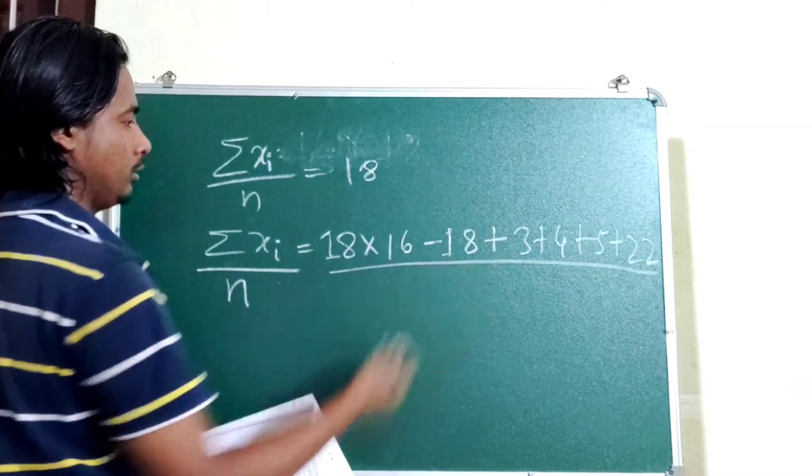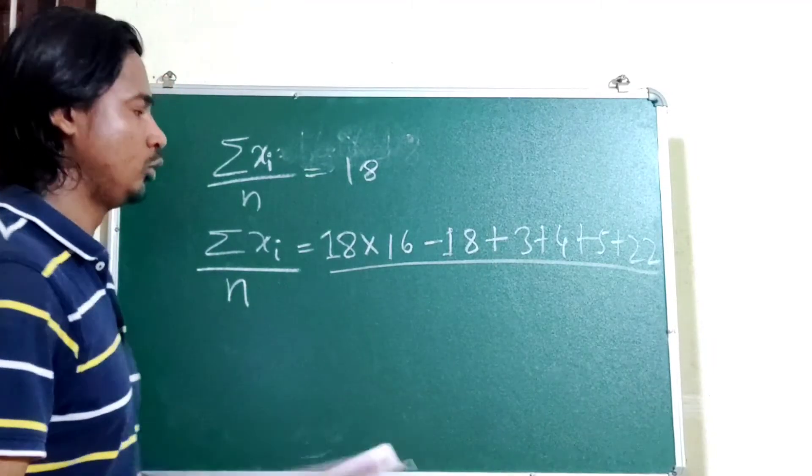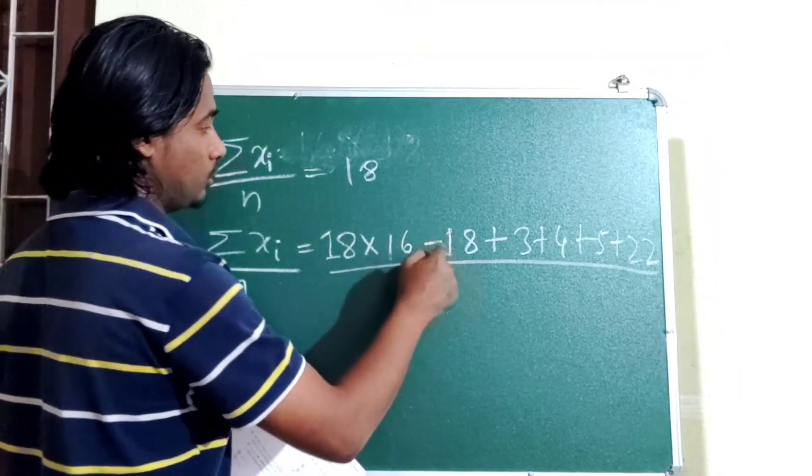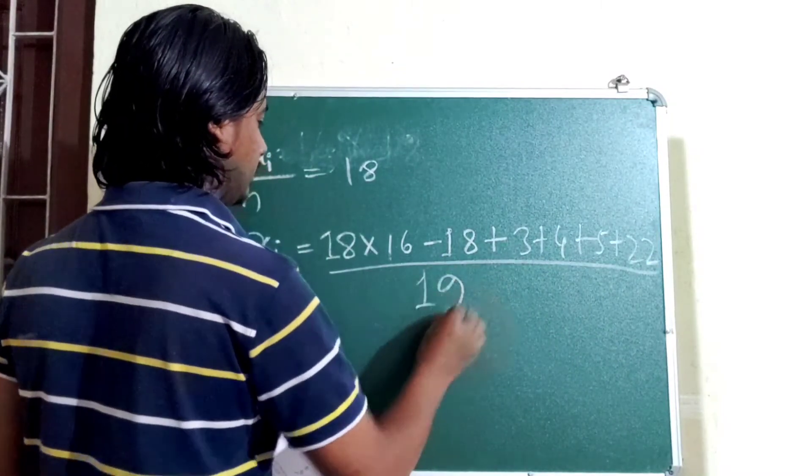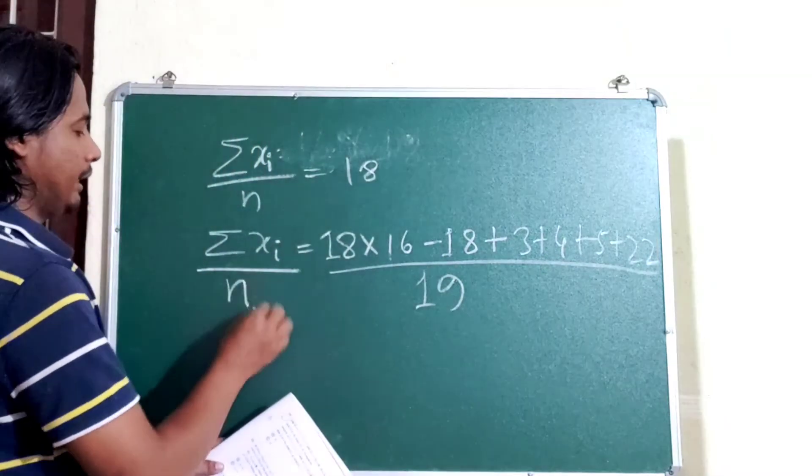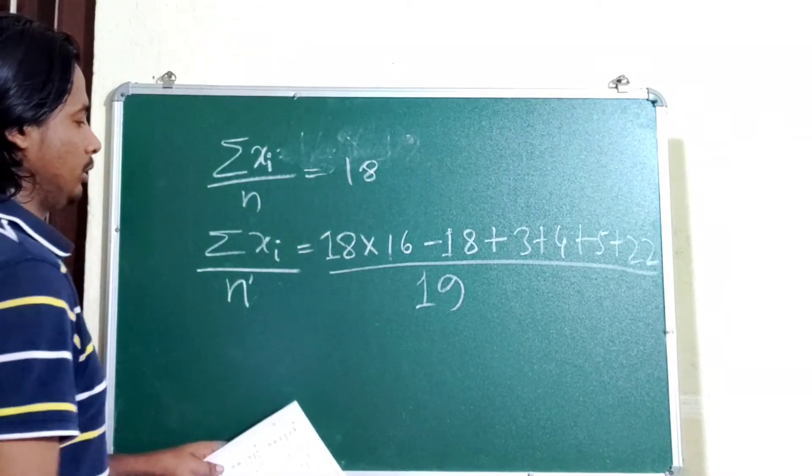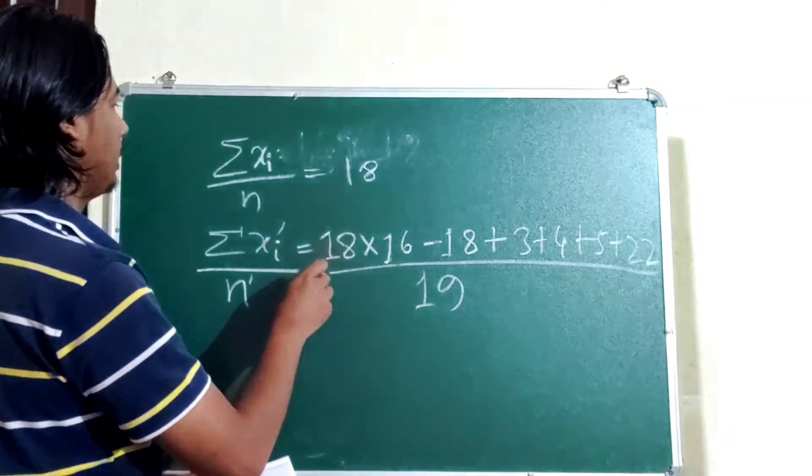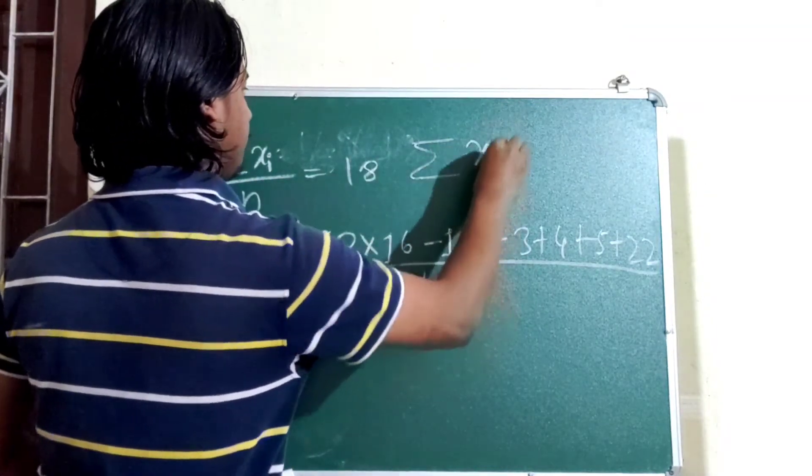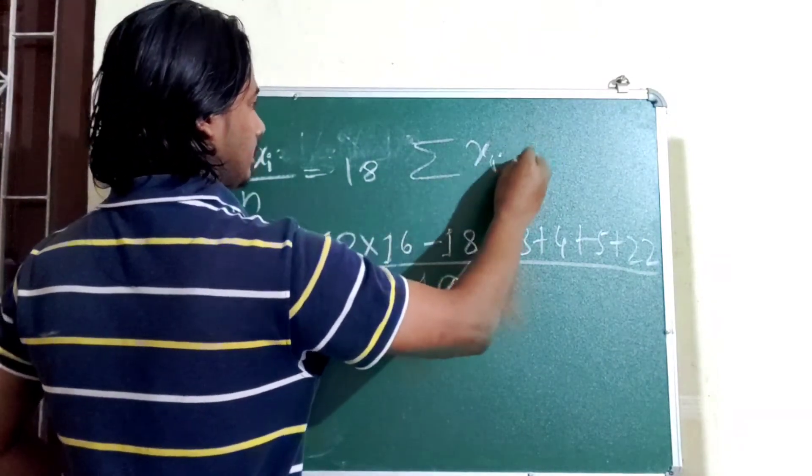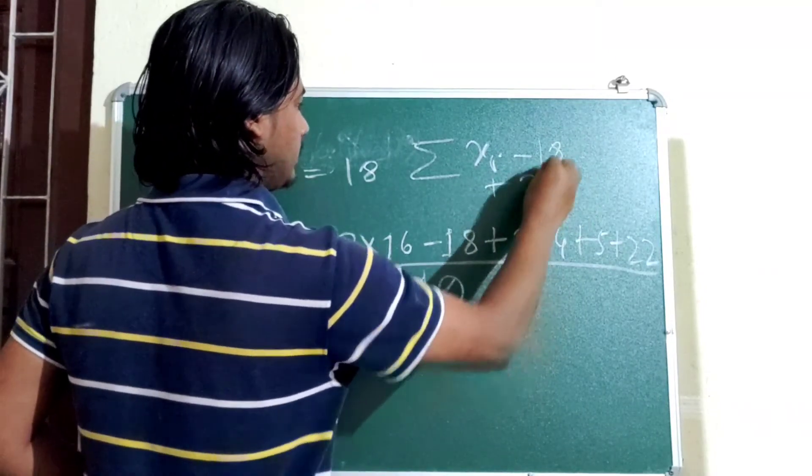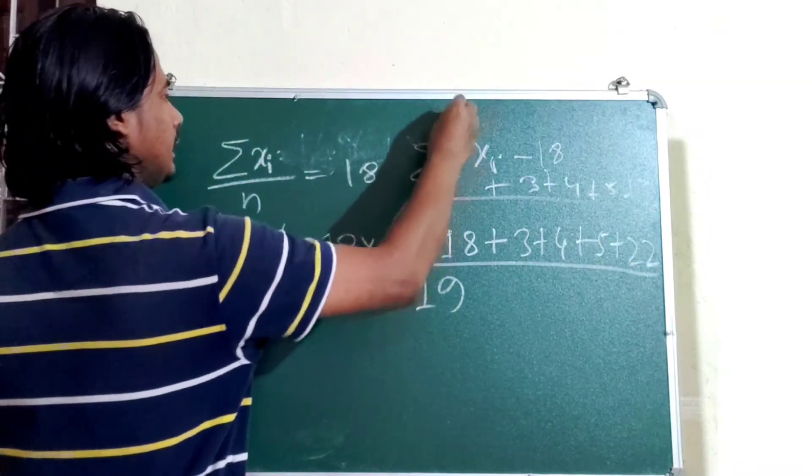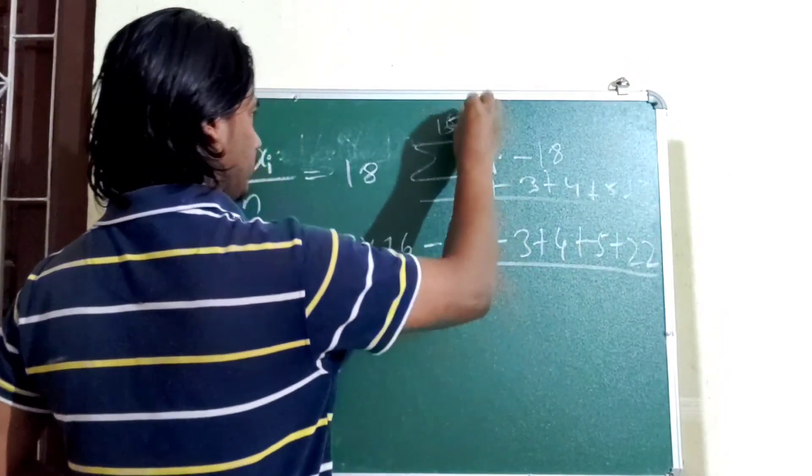After I delete it, 16 minus 1 is 15, and add 4, so total is 19. So total number of observations is 15 plus 4 is 19. So summation of x, we have to minus 18 and add the new observations 3 plus 4 plus 5 plus 22, divided by total observations. Total observation is 19. If we have 16, then delete, it's 15, then add, 15 plus 4 is 19.